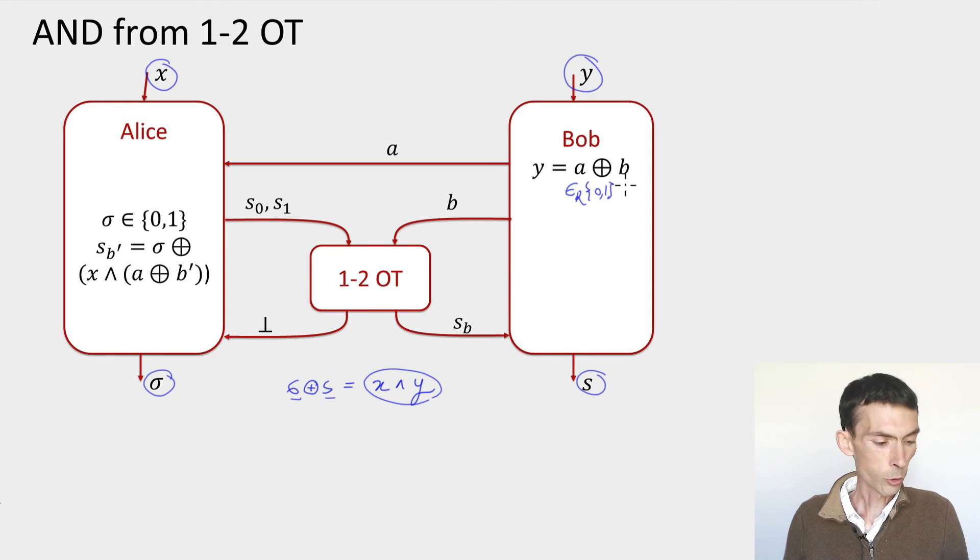At the second step, they're going to use their oblivious transfer box. The way they do it, so look at Alice's side. It's a tiny bit complicated, but look at this here. X and A plus B. So if Alice knew B, she would know both shares of Bob's input. So A plus B would be equal to Y. And so this would be exactly what they want to compute, X and Y. Of course, she doesn't know B. So instead, she prepares two bits, S0 and S1, which are taken as the parity of what the AND would be if B was 0 or 1. And she takes the X with a random bit sigma to hide this output. So that's Alice's two strings, S0 and S1. Bob, on his side of the box, simply inputs his bit B. 1-2 OT does its job, meaning Alice doesn't get anything out. And Bob gets Sb, either S0 or S1 depending on B. Bob outputs Sb directly as his output. And Alice, she outputs sigma.